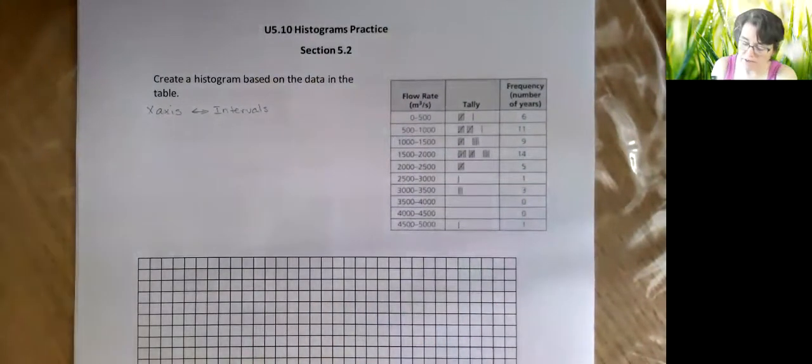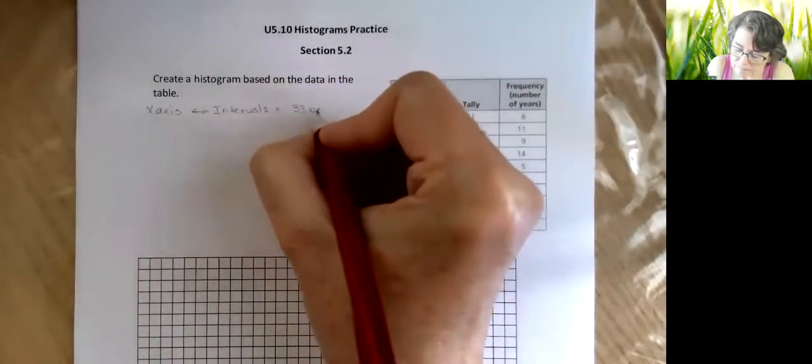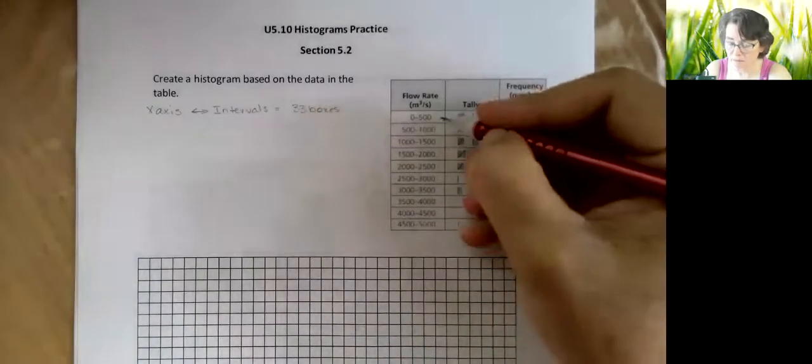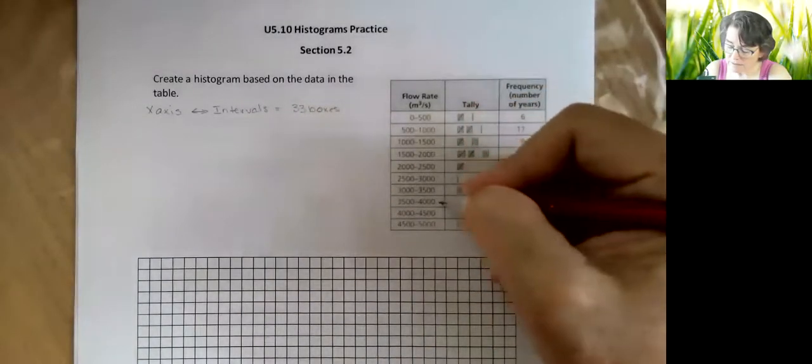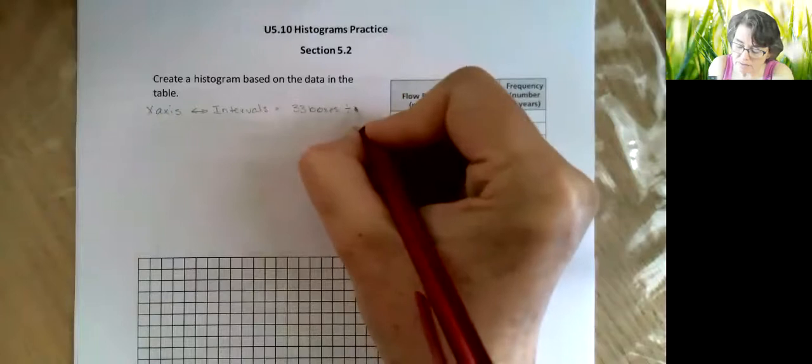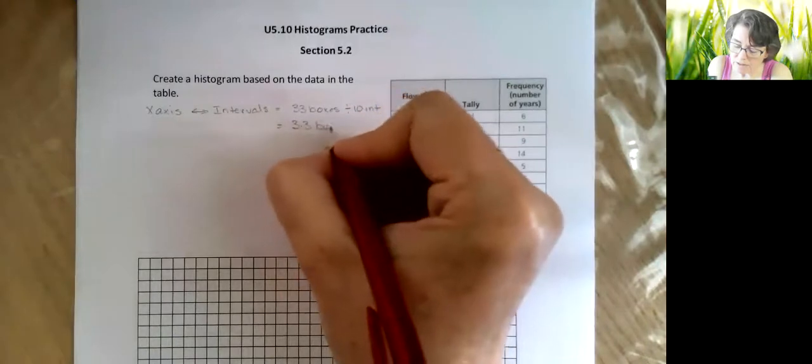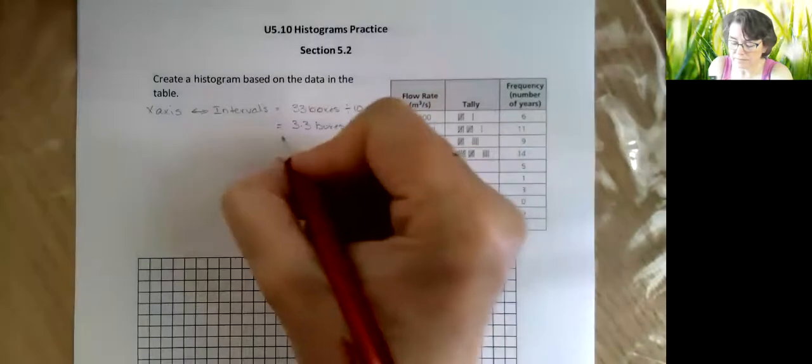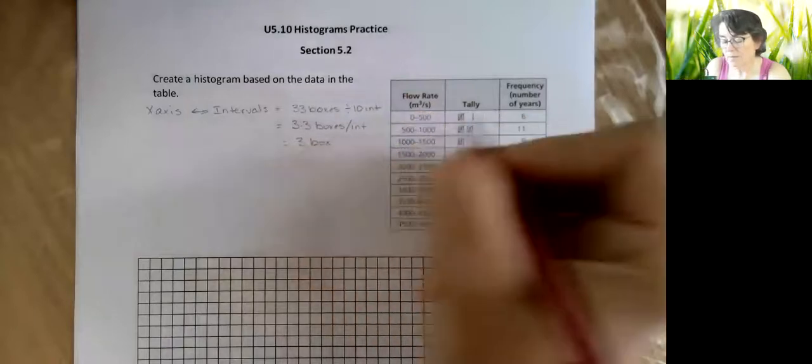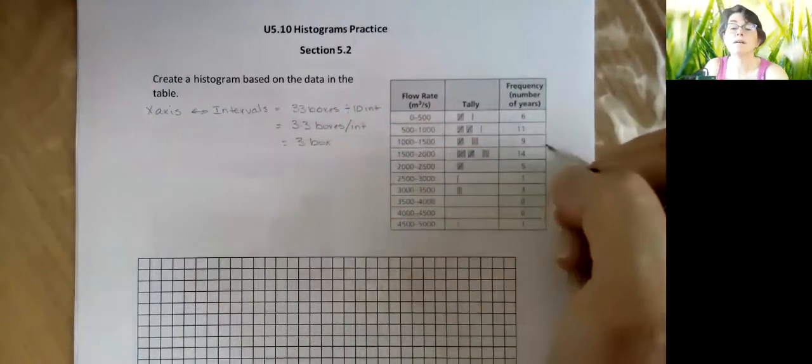So this is your intervals. Now if you count across, I did this before and there are 33 boxes and we need to divide that up among some intervals. There are 1, 2, 3, 4, 5, 6, 7, 8, 9, 10 intervals. So if we take the number of boxes and divide it by your number of intervals, you get about 3.3, so every three boxes will be one interval.